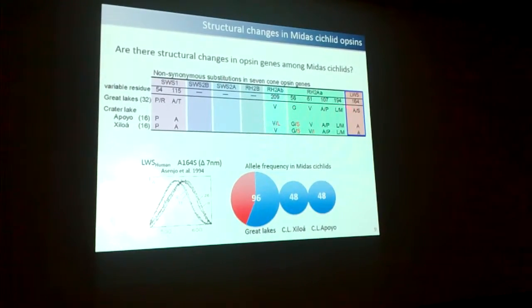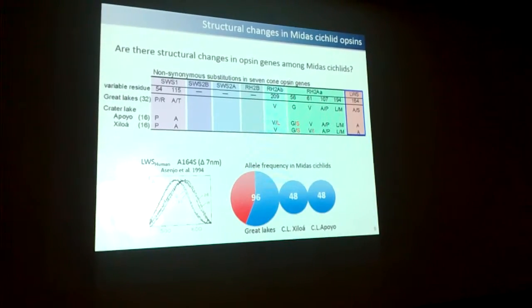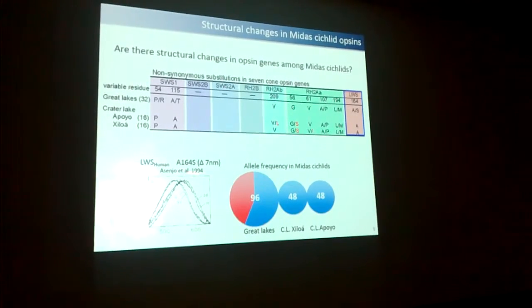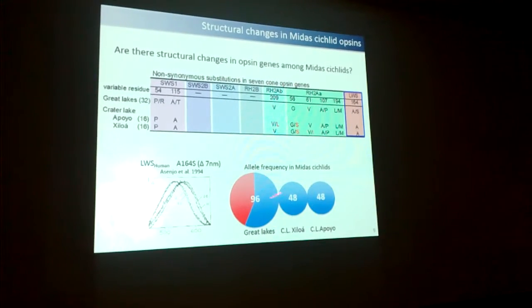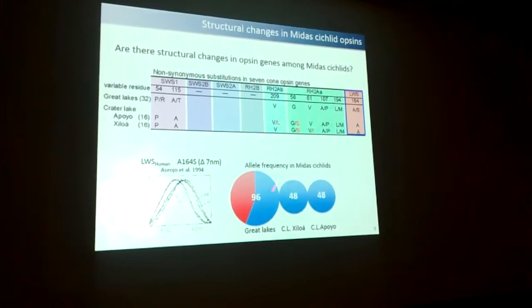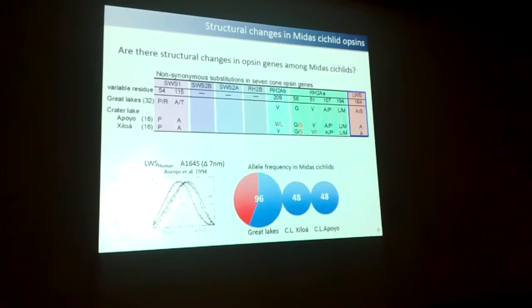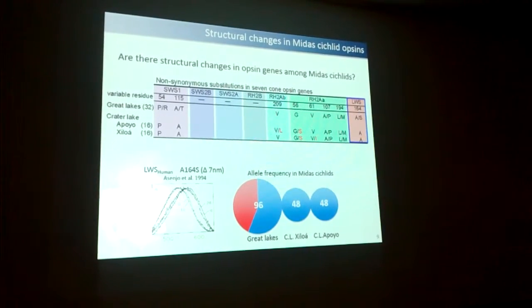That variable site is in the red pigment, at position 164 — equivalent to position 180 in humans. We know it can produce a small shift. In the ancestral population, the two alleles — A and S — are roughly 50-50, but the red-shifted allele disappears in the crater lakes. It's hard to assign an adaptive value since this could also happen through a bottleneck, but it's interesting that it occurs in the same direction in both lakes when the frequency is nearly equal in the ancestral lake.